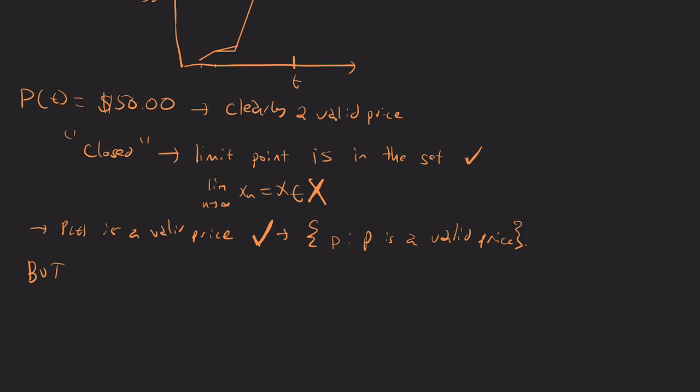But I'll show you an example that is not closed. Now consider the sequence, we'll call this p_Austin(t), which is 1.0825 times p(t). So this right here is because we have an 8.25% sales tax in Austin, which is where I currently live, Austin, Texas. So that's our sales tax.